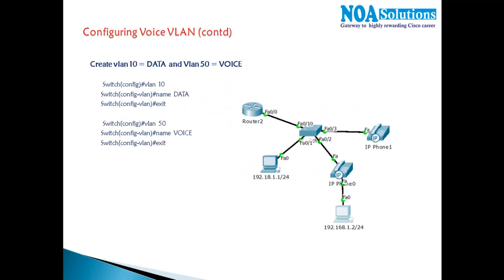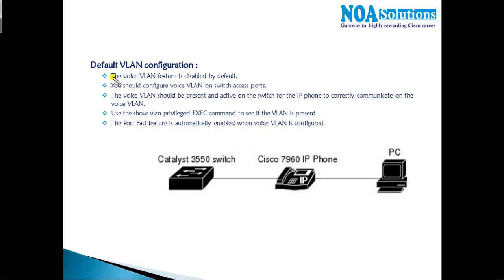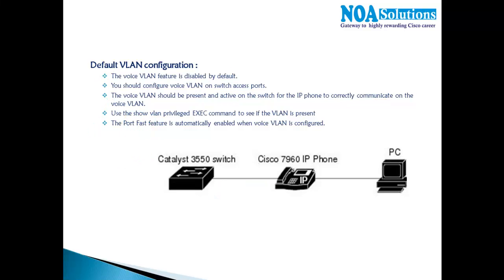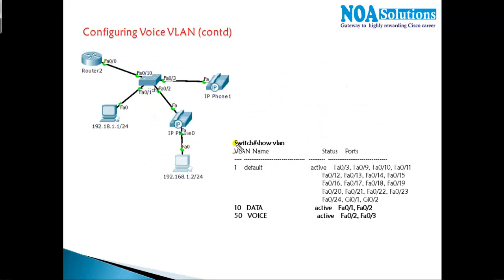Voice VLAN is disabled by default and must be enabled with the command: switchport voice vlan [vlan-number]. Voice VLAN should be configured on switch access ports, and the voice VLAN must be present and active to communicate with other voice VLANs. Configuring a port as a voice VLAN automatically enables the PortFast feature. For verification, use the show vlan command — you'll see that port 2 belongs to both VLAN 10 and VLAN 50, carrying both data and voice traffic.